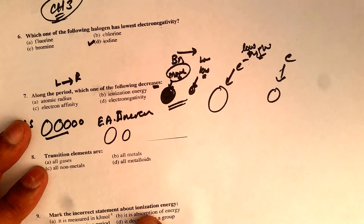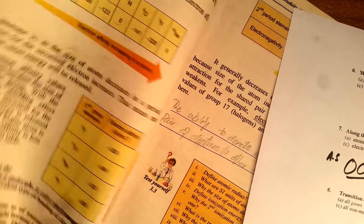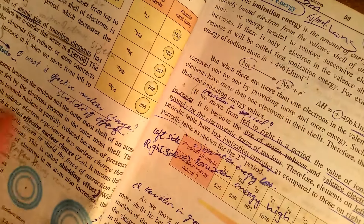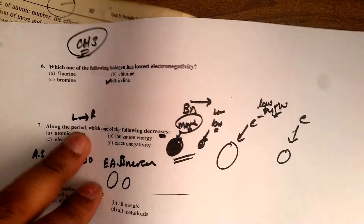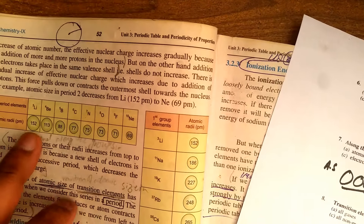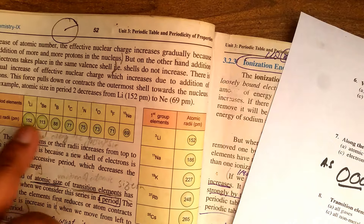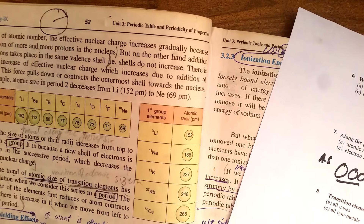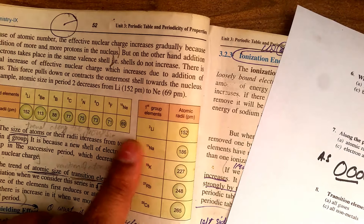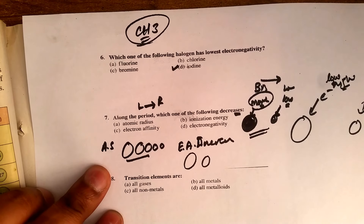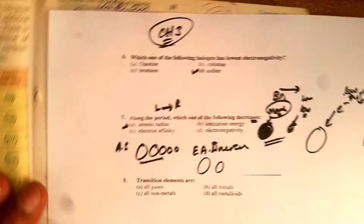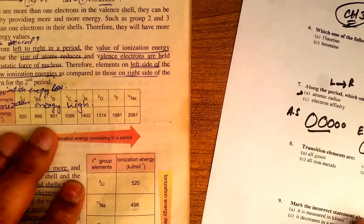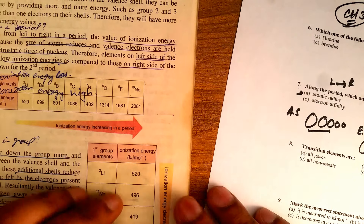Moving to MCQ 7: along the period, which of the following decreases? They are asking about atomic radius. Along the period, the atomic radius is decreasing — so atomic radius decreases is the answer. Ionization energy, on the other hand, is increasing along the period.